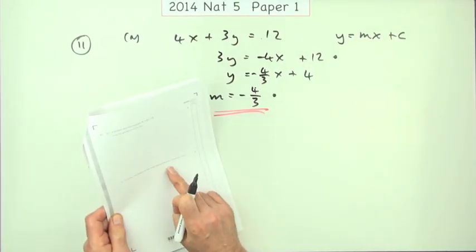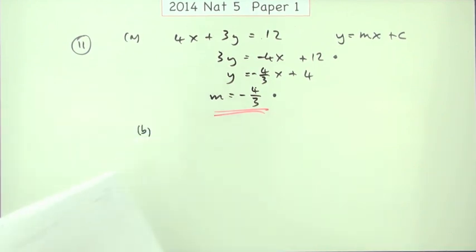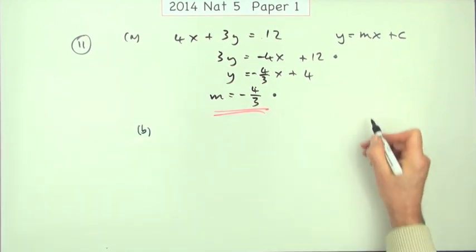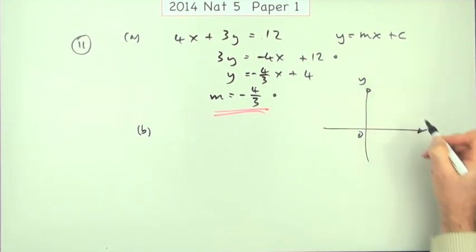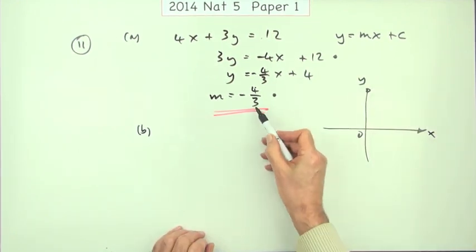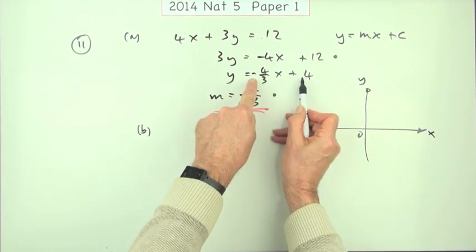Part b. Find the coordinates of the point where this line crosses the x axis. Don't need a sketch of the line, just putting it in anyway for illustration purposes.